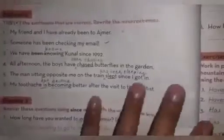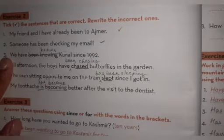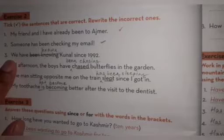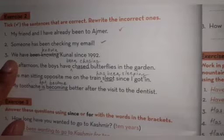Exercise Two: Tick the sentences that are correct and rewrite the incorrect ones. First is done. Second: 'Someone has been checking my email' — that is correct. Third: 'We have been knowing Kunal since 1992' — this is incorrect. The correct sentence is: 'We have known Kunal since 1992.' You know a person since a specific time, so it is 'have known,' not 'have been knowing.'